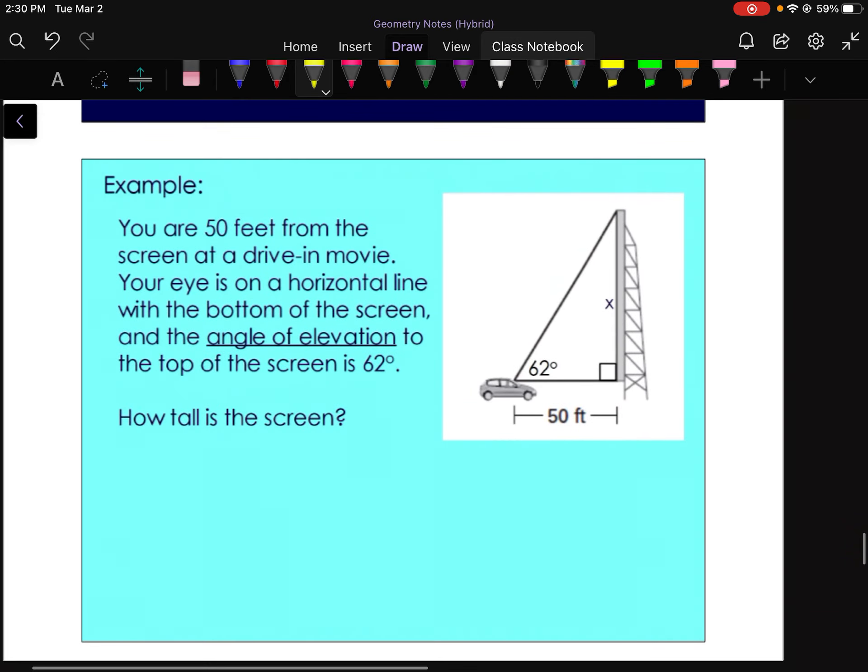So our first example here, you are 50 feet from the screen at a drive-in movie. Your eye is on a horizontal line with the bottom of the screen, and the angle of elevation, which means from the ground or the bottom of your triangle up to the hypotenuse, is 62 degrees. How tall is the screen?